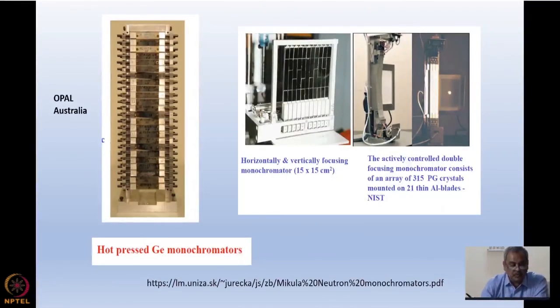I will show you Opal Australia reactor. These are hot pressed germaniums—they have been made a vertical stack of germanium, each one is hot pressed, meaning they have a lot of mosaic spread in them. First you make the vertical focusing to reduce the size of the beam, and then there is mosaic spread so you also have delta lambda and get more intensity.